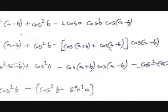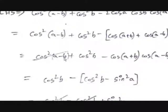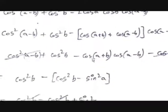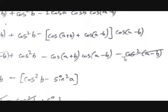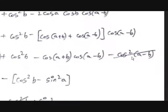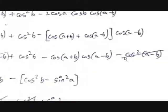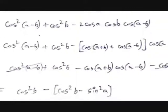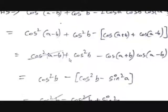Expanding: cos²(A−B) + cos²B − cos(A+B)·cos(A−B) − cos²(A−B). The +cos²(A−B) and −cos²(A−B) cancel out, leaving: cos²B − cos(A+B)·cos(A−B).